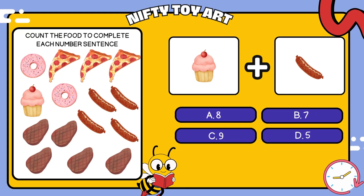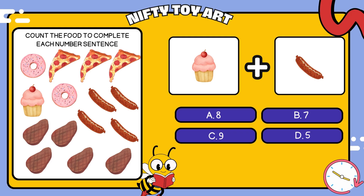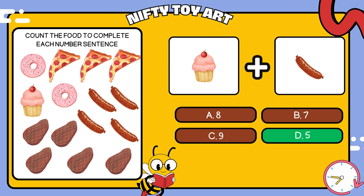We have cupcakes and sausages. How many foods is that in total? That's right, five.